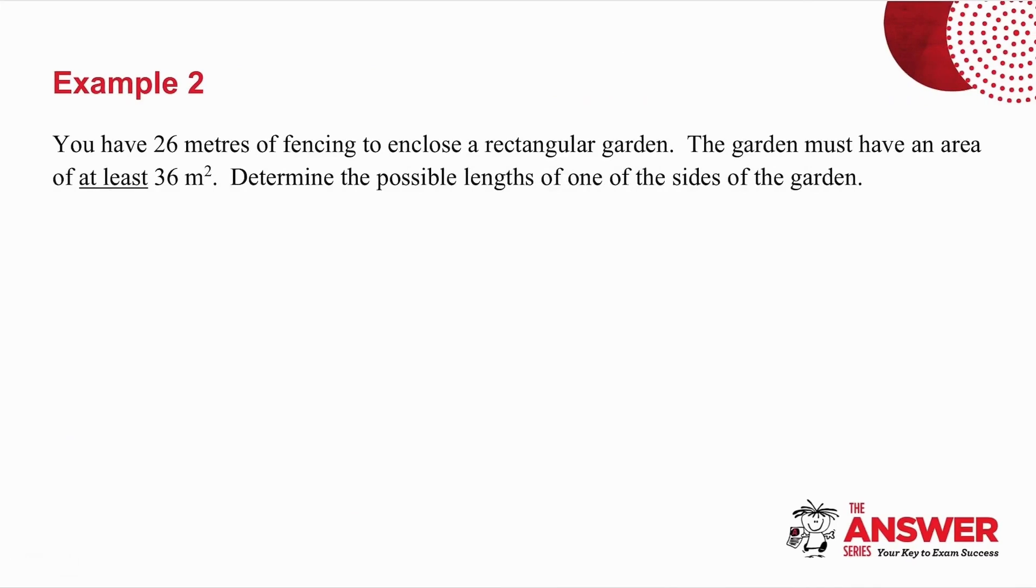Example number 2. It's a word problem. And what you've got to do in word problems is you've got to read very carefully and get the maths out of the words. So you've got 26 meters of fencing to enclose a rectangular garden. The garden must have an area of at least 36 meters squared. And they say to you, determine the possible lengths of one of the sides. They've used the plural there, which means maybe I'm going to get more than one answer. So pause the video, try this, and then we'll look at it together.